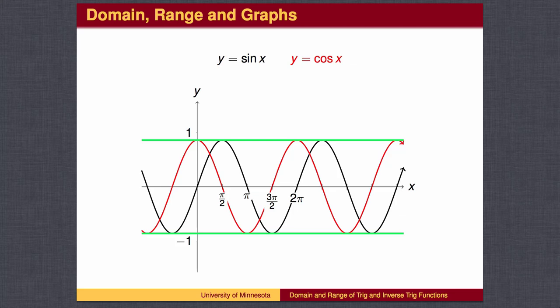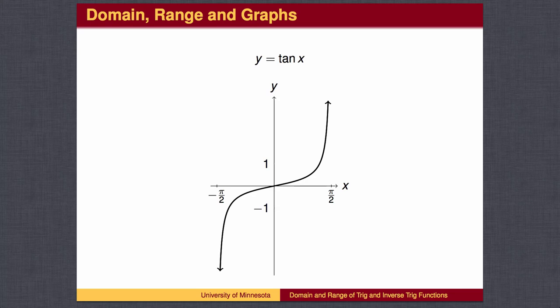The domain and range can also be found by analyzing the graph of a function. The graphs of sine and cosine go forever to the left and to the right, so the domains of each are all real numbers. The waves oscillate between negative 1 and 1, shown here bounded by the green lines, which bound the range between negative 1 and 1. The tangent graph goes infinitely far below and above the y-axis, so the range is all real numbers.